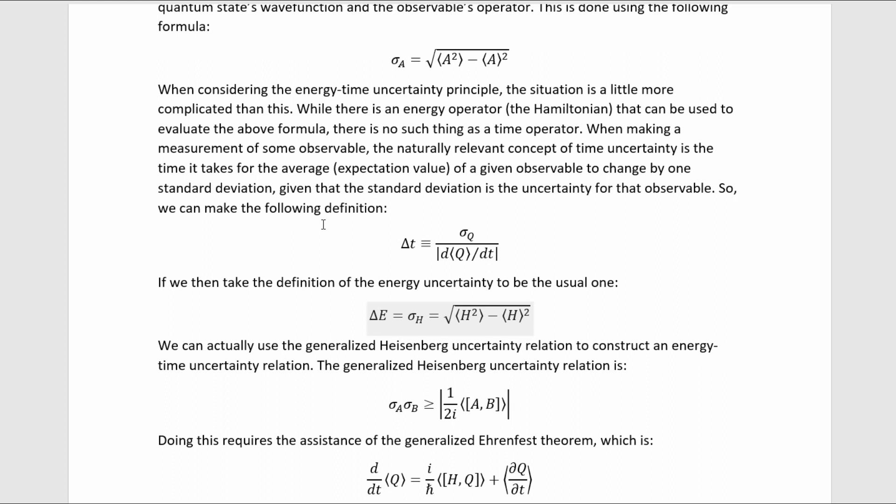So, we can make the following definition, where delta t, the uncertainty in the time, is just the standard deviation in the observable you're considering, divided by the absolute value, so just the magnitude, of the rate of change of the average of that observable.